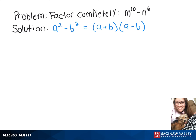We're going to factor m to the tenth minus n to the sixth. Looking at our difference of squares formula, we can rewrite m to the tenth minus n to the sixth as m to the fifth squared minus n to the third squared.